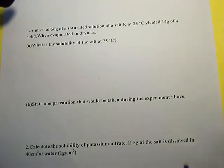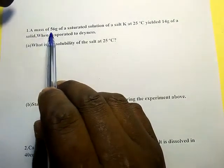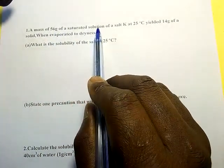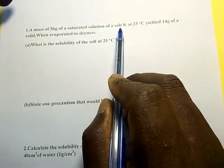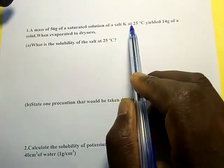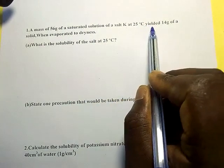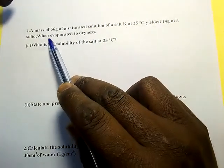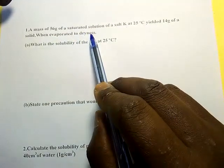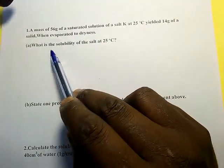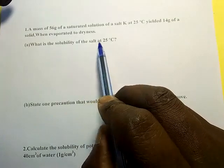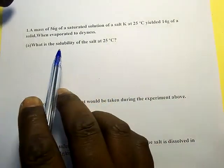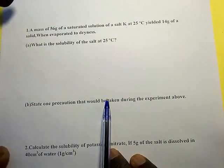Example 1. A mass of 56 grams of a saturated solution of a salt K at 25 degrees Celsius yielded 14 grams of solid when evaporated to dryness. What is the solubility of the salt at 25 degrees Celsius?